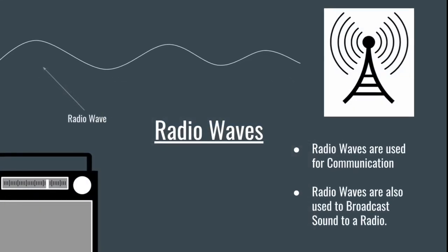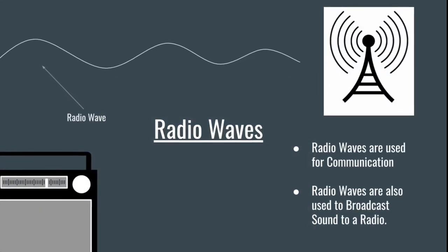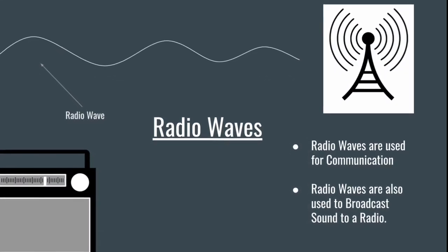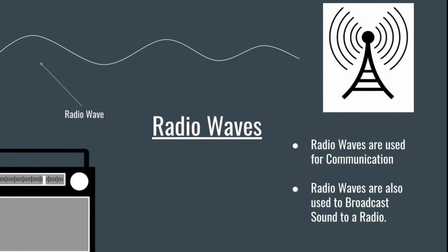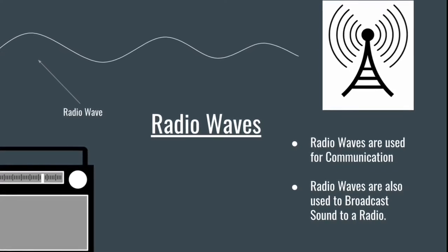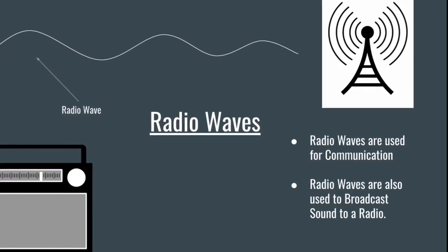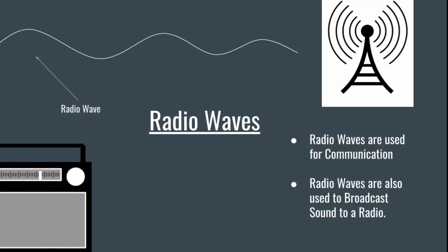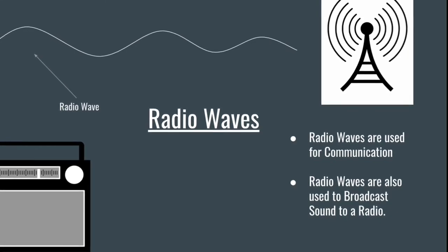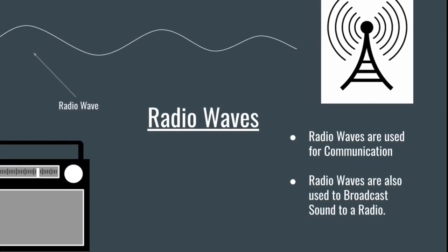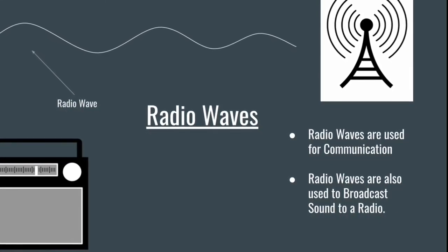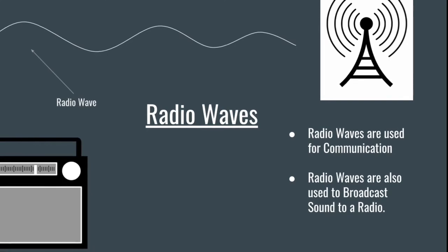Radio waves have the lowest amount of energy, with wavelengths from 1 mm to 100 km and frequencies from 300 GHz to 3 kHz. Radio waves are used to transfer sound from a radio station to a radio, and they also bring internet to cellular devices.